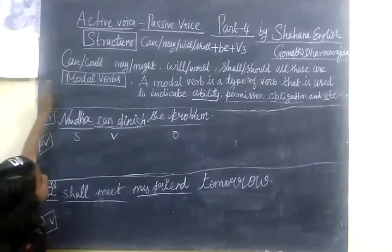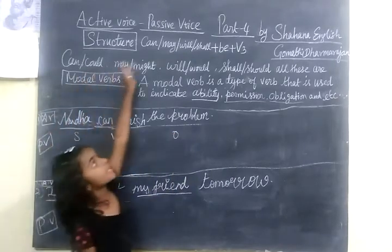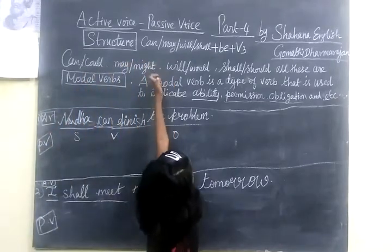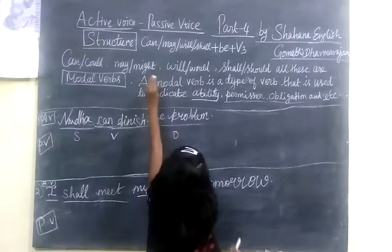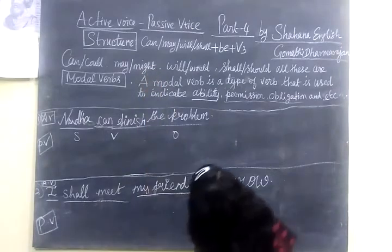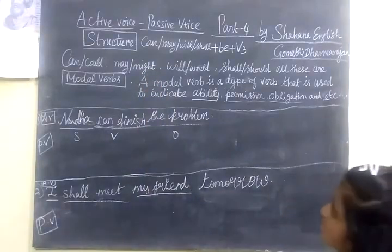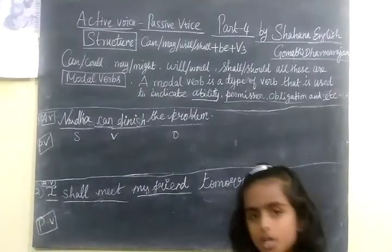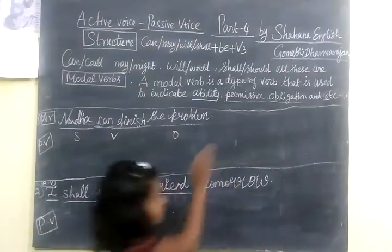The structure for passive modal verbs is: can, may, will, shall — plus 'be' plus the past participle (V3). This is the standard structure for all modal passives.